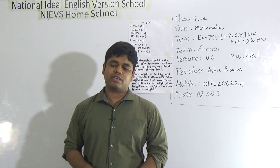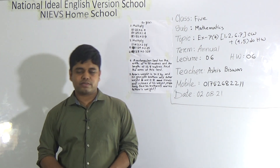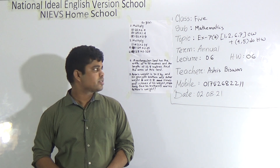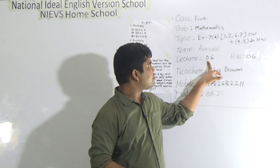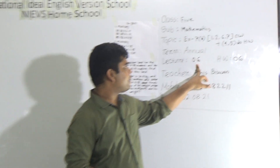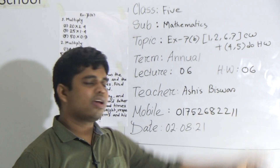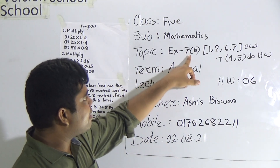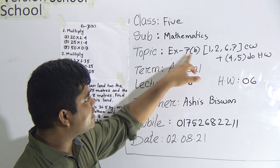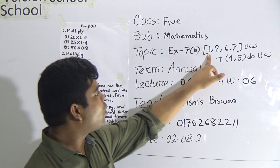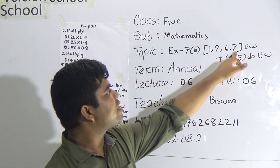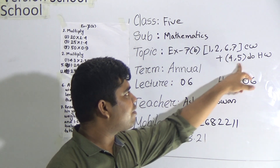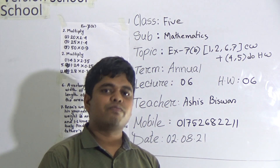Today I am going to take a math class for the students of class 5. Let us start our class. Today is our lesson number 6 of annual term and today's SW number will be 6. Our today's topic is exercise 7b. From exercise 7b, we shall solve 1, 2, 6, 7 as your CW and question number 4 and 5 will be your SW.